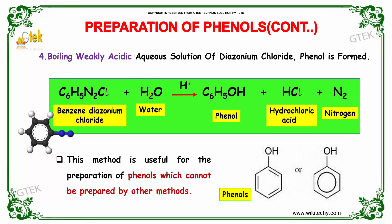By boiling weakly acidic aqueous solutions of diazonium chloride, phenols are formed. Benzene diazonium chloride reacts with water in the presence of H⁺ ions to produce phenol and hydrochloric acid, with nitrogen released as a byproduct. This method is useful for the preparation of phenols which cannot be prepared by other methods.